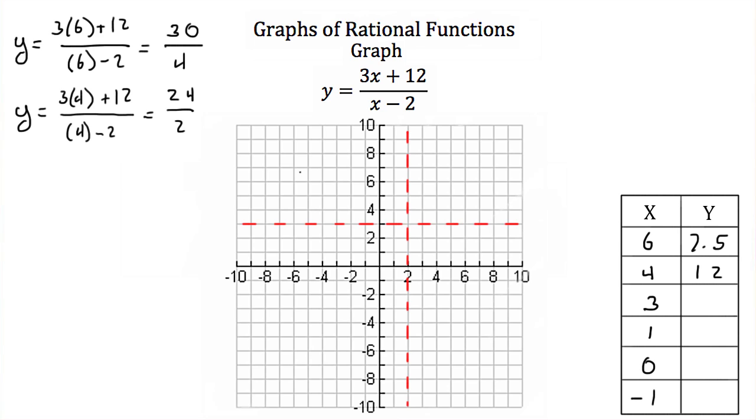Next we plug in 3 for x. We'll get y equals 3 times 3 plus 12 all over 3 minus 2. Now 3 times 3 is 9 plus 12 is 21. 3 minus 2 is 1. So when x is 3, our y is 21.